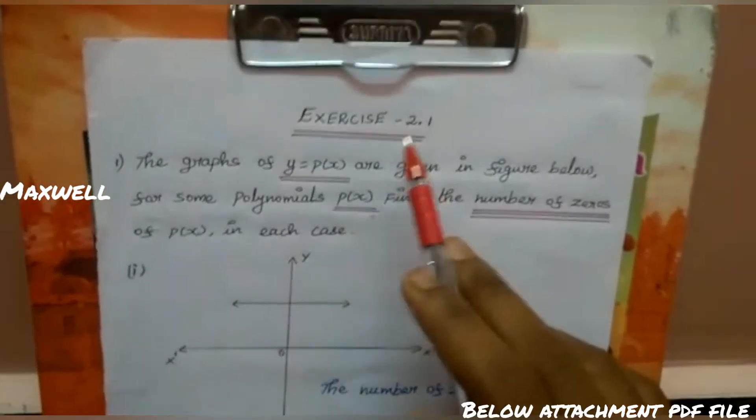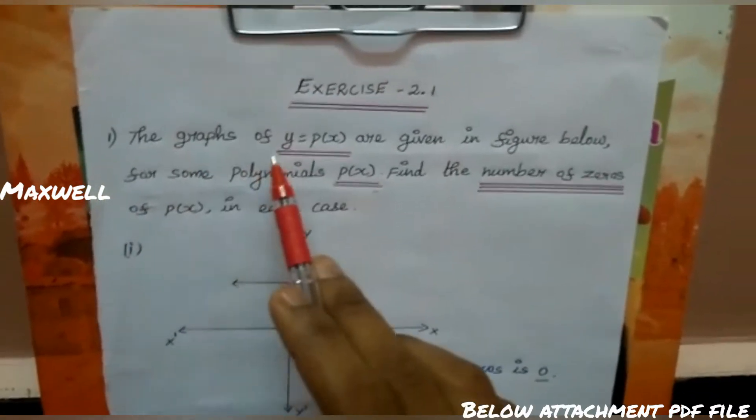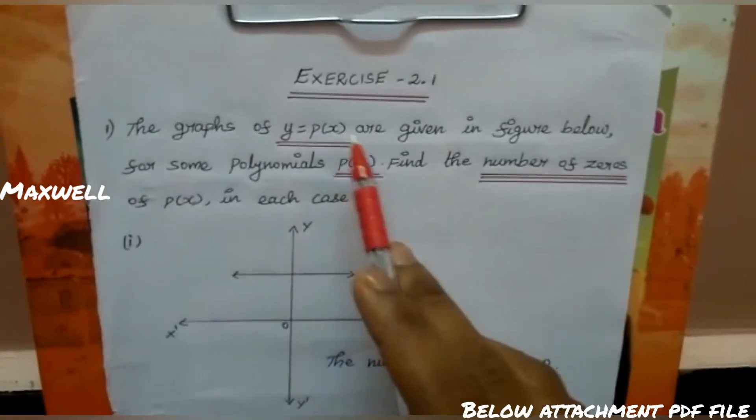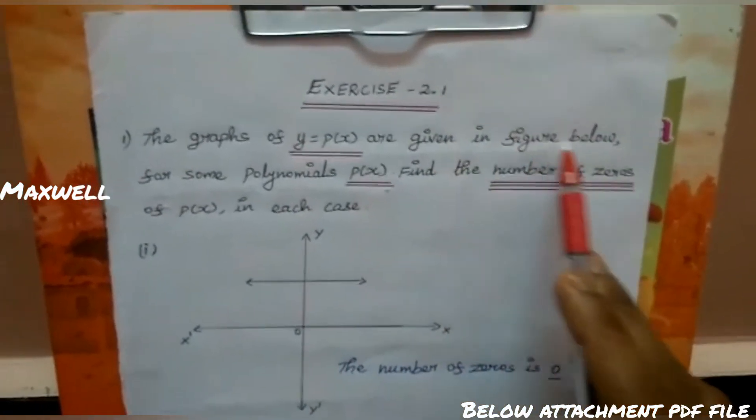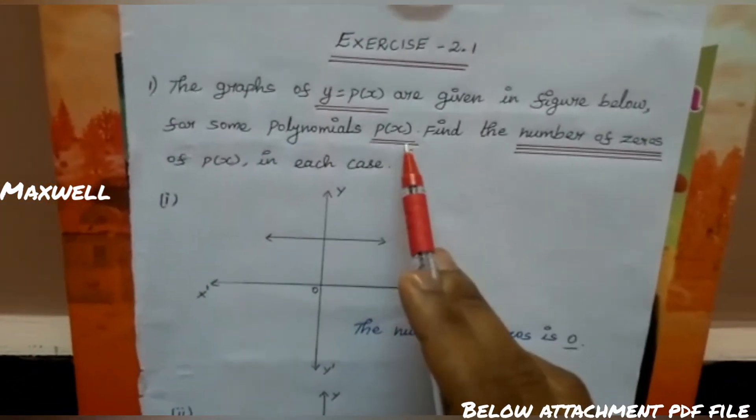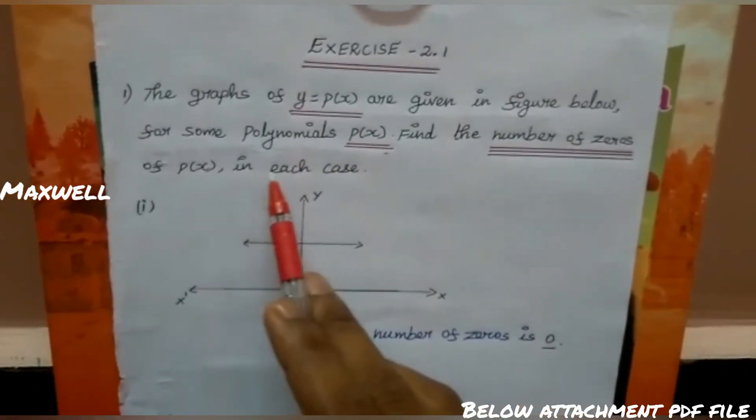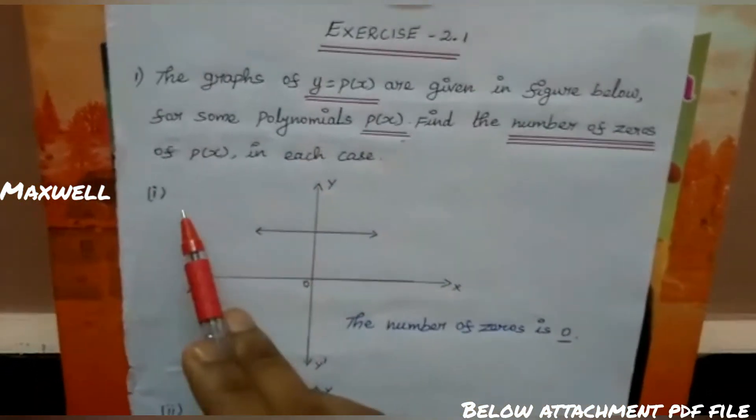Chapter 2, Exercise 2.1. First question: the graph of y equal to p of x are given in figure below for some polynomial p of x. Find the number of zeros of p of x in each case.